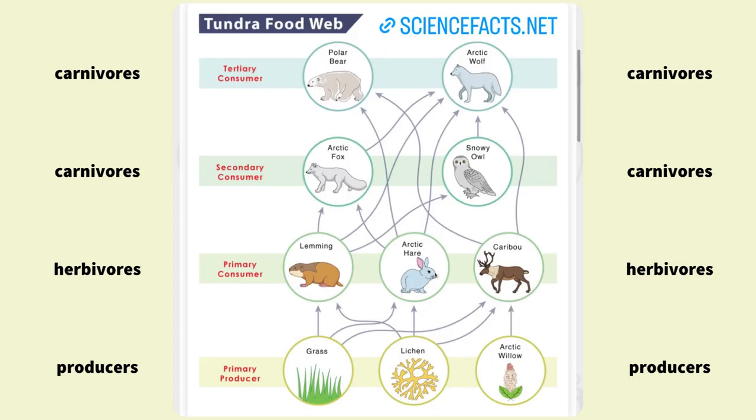The sun is what allows for producers to grow. The producers are then eaten by herbivores, such as the arctic hare, caribou, and lemming. The herbivores are eaten by carnivores, such as the arctic fox, snowy owl, polar bear, and arctic wolf. Carnivores such as the arctic fox and the snowy owl are then eaten by the tertiary consumers, the polar bear and the arctic wolf.